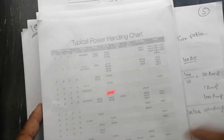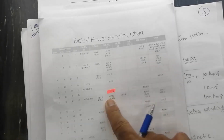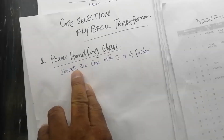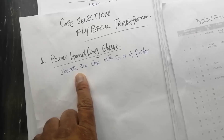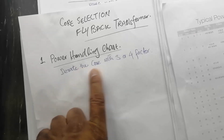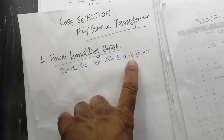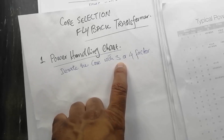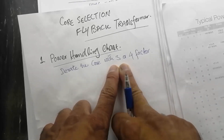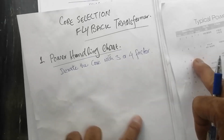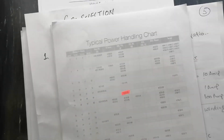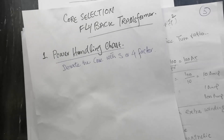This is a rough idea for core selection. For an exact core, you have to use formulas, but the power handling chart is a useful starting method. For example, to design a 16-watt supply, if you select a derating factor of 3 to 4, you multiply 16 by 3 or 4, giving 48 to 64 watts, then select the core from the chart at 200 kilohertz.